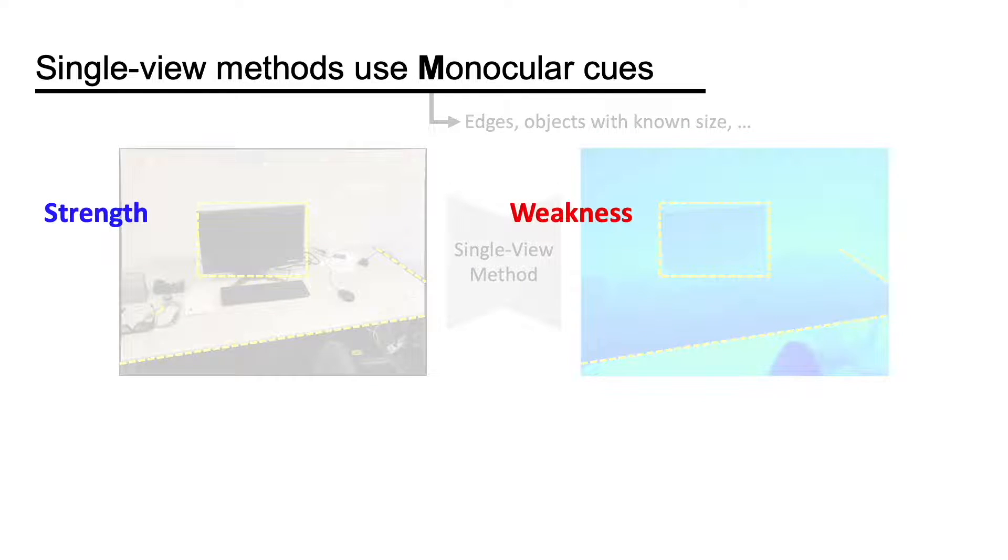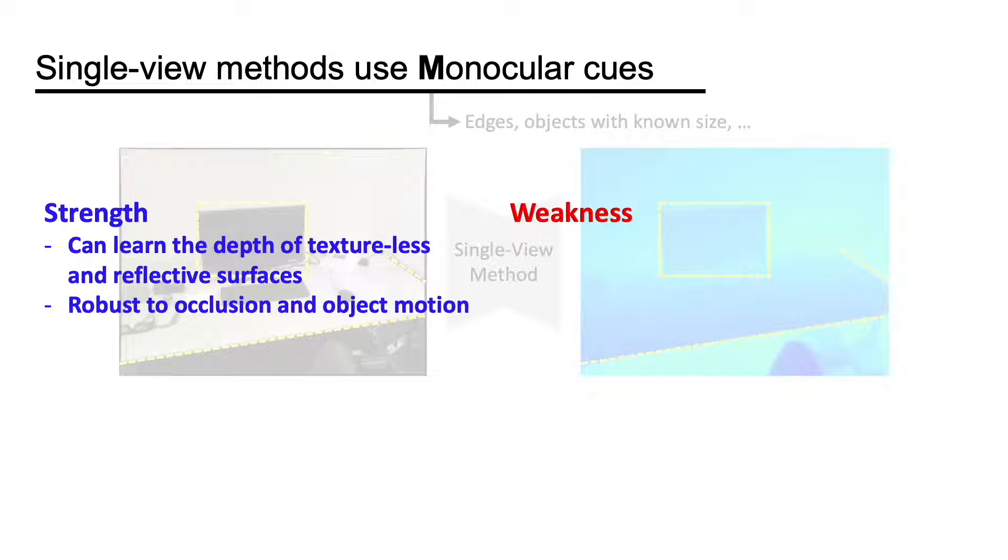With suitable supervision, the network can learn the depths of textureless and reflective surfaces. As the prediction is made on a single image, it is also robust to occlusion and object motion. However, the accuracy is limited due to the inherent ambiguity of the problem.